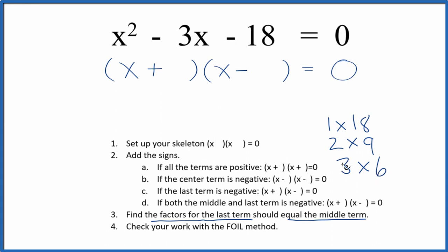6 and 3, that works. So if I put a minus 6 here and a 3 here, 3 times negative 6 that's negative 18. And then negative 6 and 3, that gives me my negative 3.